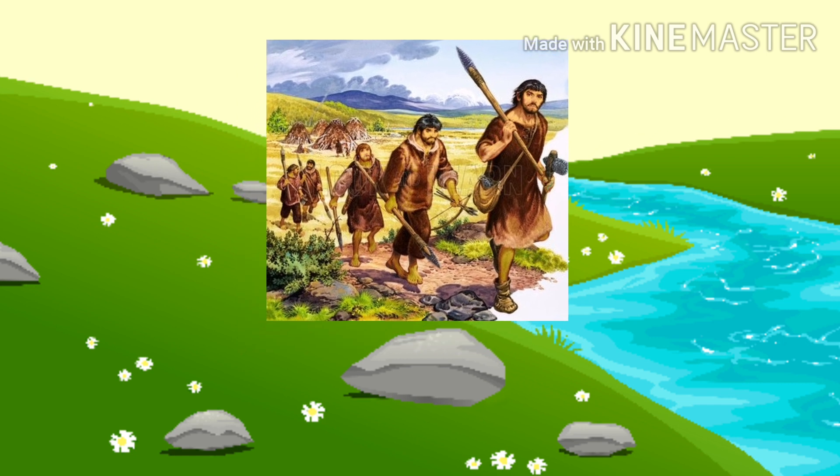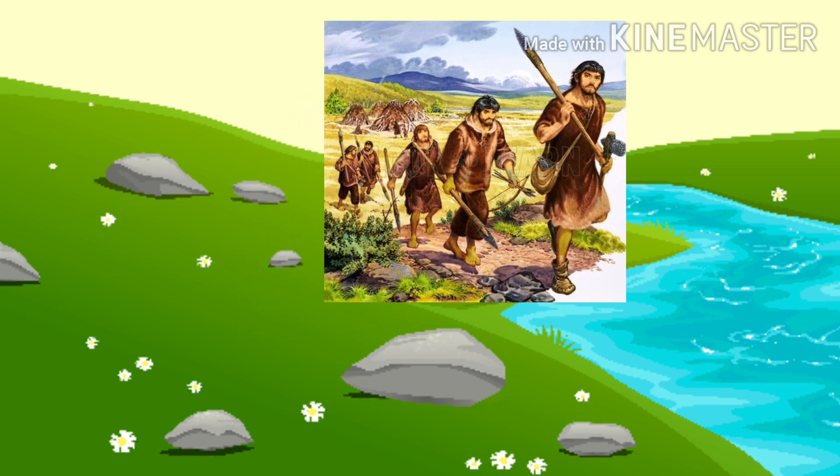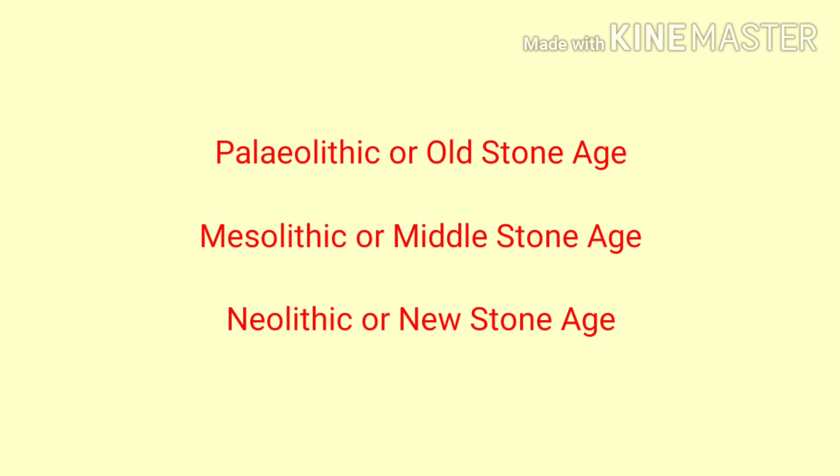Hunter-gatherers lived during the prehistoric period. People in this age used stones for making tools. Due to this, this period is also called the Stone Age. The Stone Age is divided into three phases.